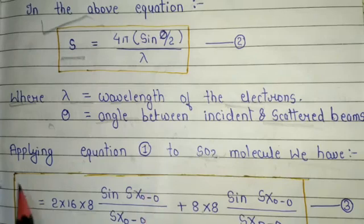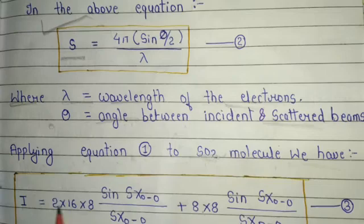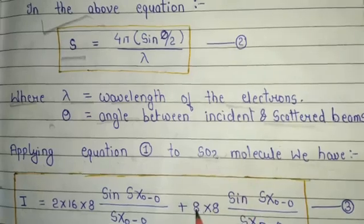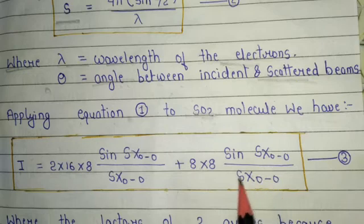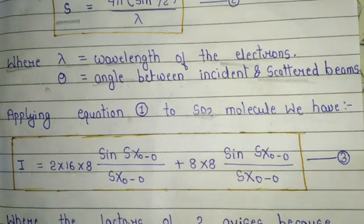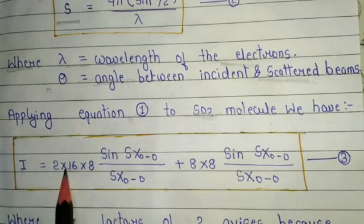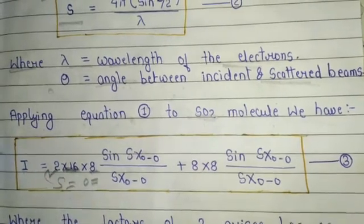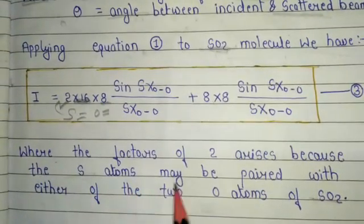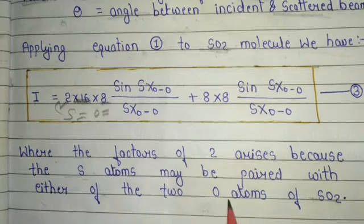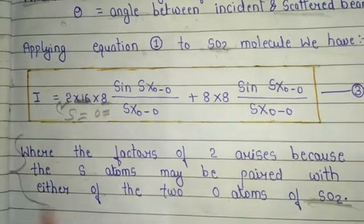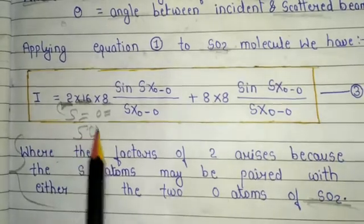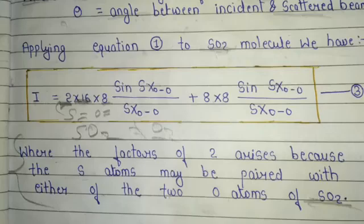Applying equation 1 to the SO₂ molecule, we have: I = 2 × 16 × 8 · sin(s·x_{O-O}) / (s·x_{O-O}) + 8 × 8 · sin(s·x_{O-O}) / (s·x_{O-O}). This is equation 3. Here 16 is the atomic number of S and 8 is the atomic number of oxygen. The factor of 2 arises because the S atom may be paired with either of the two oxygen atoms of SO₂.